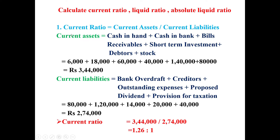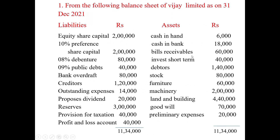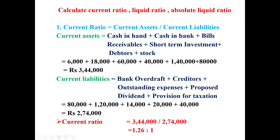First, we find the Current Ratio. Formula: Current Assets divided by Current Liabilities. Current assets are: Cash in Hand, Cash at Bank, Bills Receivable, Short-Term Investment, Debtors, and Stock. The amounts are: Cash in Hand 6,000, Cash at Bank 18,000, Bills Receivable 60,000, Short-Term Investment 40,000, Debtors 1,40,000, Stock 80,000. Total Current Assets: 3,44,000.